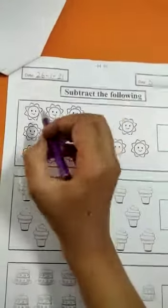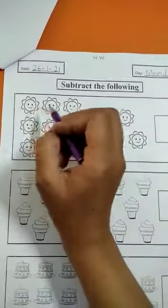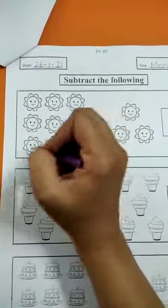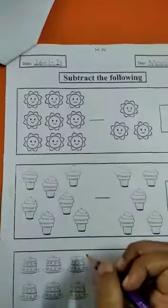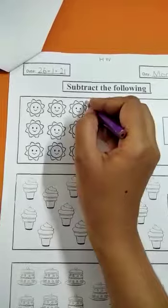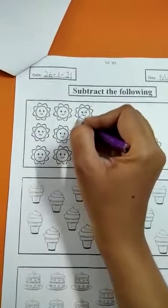Now how many are there? We have these flowers: 1, 2, 3, 4, 5, 6, 7, 8, 9. We have to cut 3. We have to cut 3 out of 9.